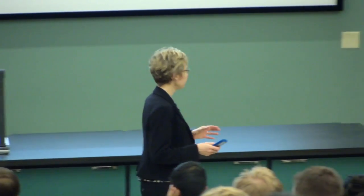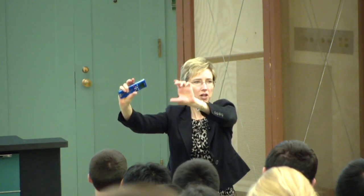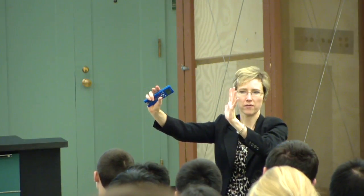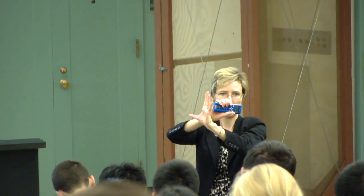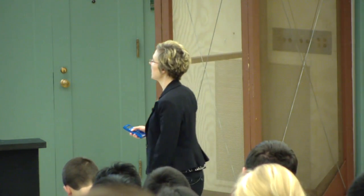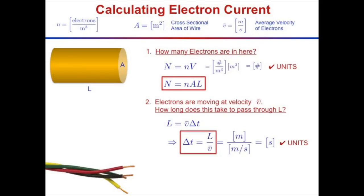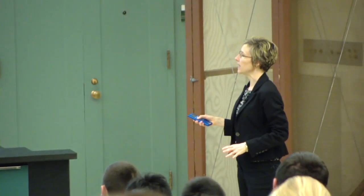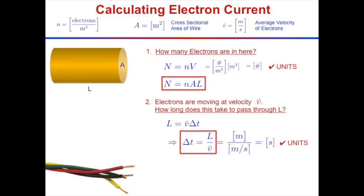Now let the electrons move at velocity V. I want to know how many electrons pass through the cross-sectional area A as I move that chunk into the next section of wire. How long did it take? Using distance equals rate times time: the distance is L, the rate is the average electron velocity V, so delta T equals L over V.